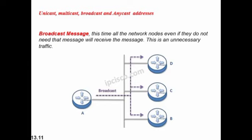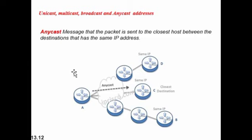In broadcast communication, there is unnecessary traffic — the message goes to everyone and receivers can be infinite. In anycast, the packet is sent to the closest host among destinations that share the same IP address. For example, if multiple destinations have the same IP, the message is sent to the closest one, say C1, with that same IP.